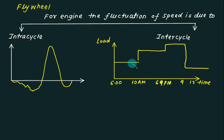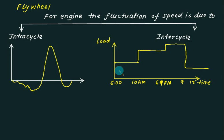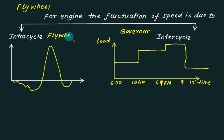If you are able to maintain the speed of the turbine over this range of cycles, it is called inter-cycle. If you are able to maintain the speed constant over one cycle, it is called intra-cycle. These inter-cycles consist of thousands of such single cycles. We are not bothered about one cycle but about the full range from 6 a.m. to 10 a.m. So as speed increases over this long range, we use governors. The flywheel is used to control speed changes within one cycle, and the governor is used for a very long range of cycles.